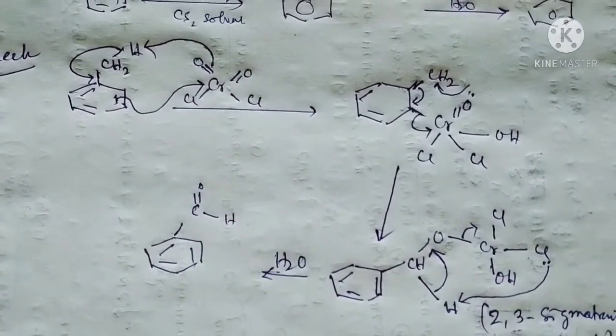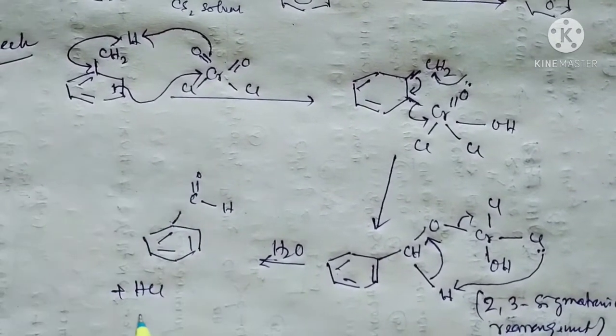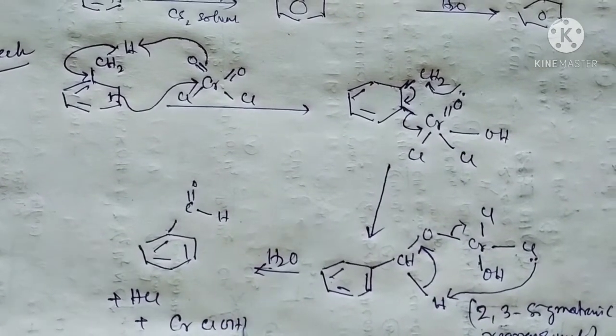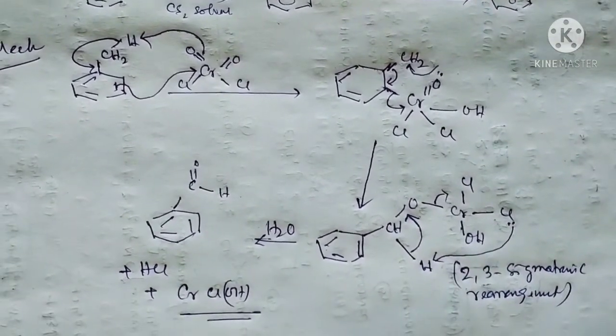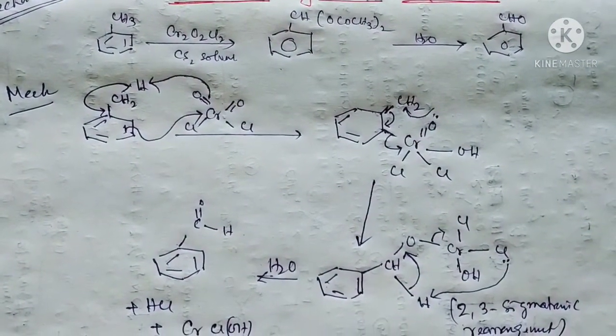This is our benzaldehyde, which forms along with some amount of HCl as well as some amount of CrCl, Cl, Cl over here. So this is the actual mechanism behind Etard's reaction, students.